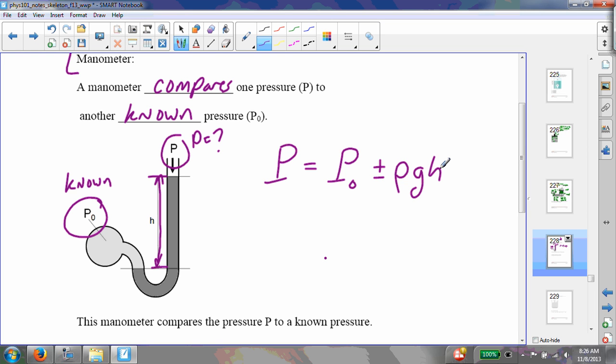My unknown pressure is going to equal P naught plus or minus rho times G times H. So when you look at a manometer, you need to ask yourself, what is P larger or less than the known pressure? And in this case, P is less than the known pressure. So P naught is bigger, so it's able to push this liquid down further and then push it all the way back up here.